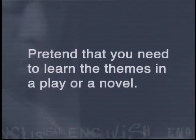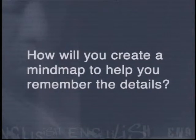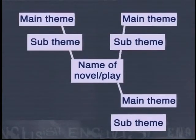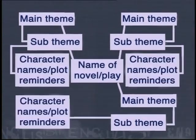Pretend that you need to learn the themes in a play or novel. How will you create a mind map to help you remember the details? Write down the name of the play or novel. Map the main themes of the novel around this. For each main theme, write down the subthemes or smaller related themes. For each subtheme, write down the characters' names or plot reminders. Remember, each item of your mind map cannot exist without other information — it is a reminder of the detail you have learnt. The mind map serves only as a reminder of the important point.